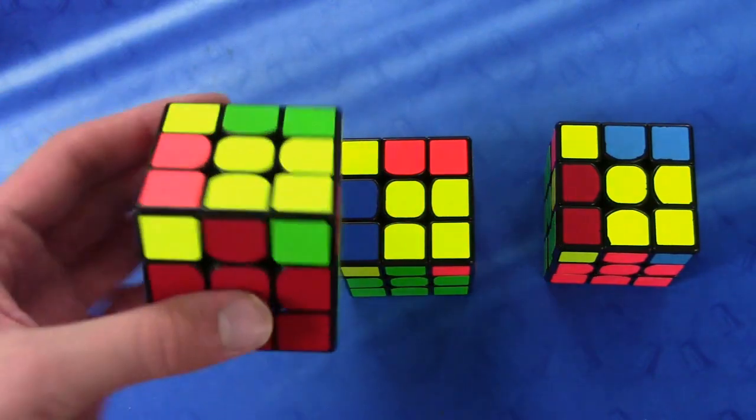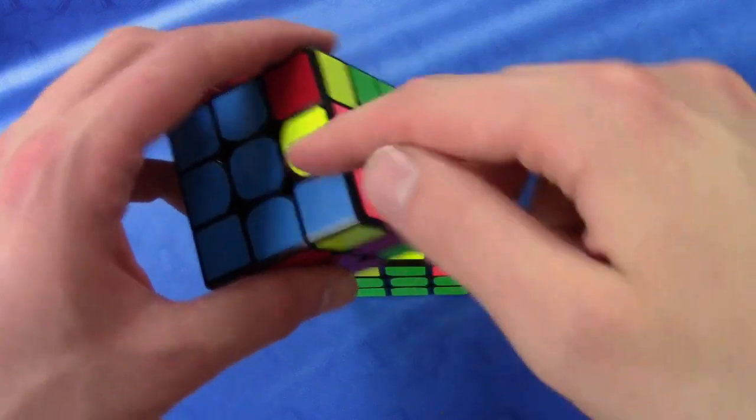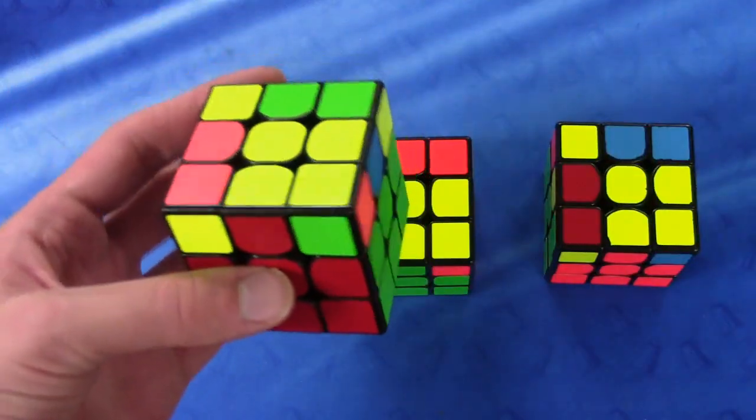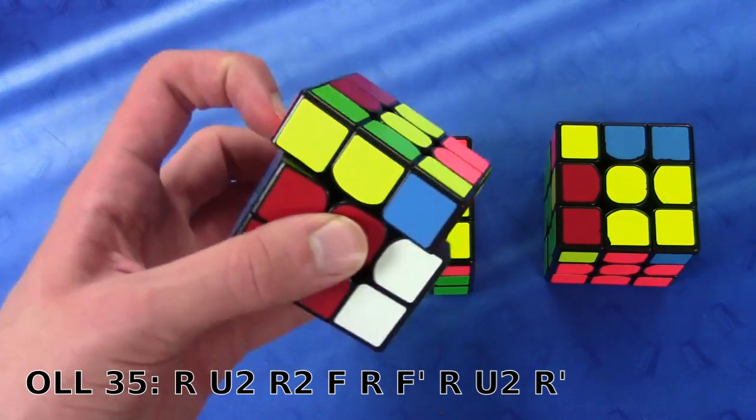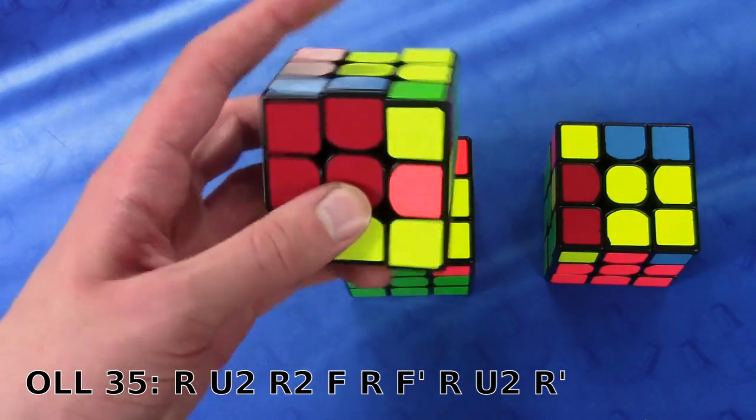This case looks a lot like the previous one, except as you can see, these bars do not match up. On this one, you're gonna have to hold from here and do this. It's just the standard two-handed algorithm.